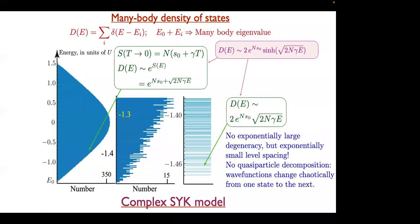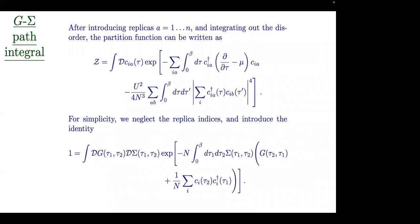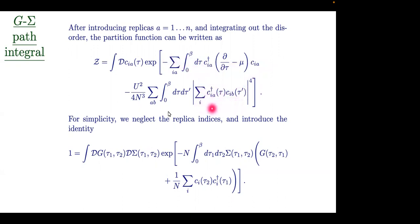Now we understand the results and how to compare with actual numerics of this many-body system. Let me show you how it's done. You take the original model and average over the u's. This is the average of the partition function — it is a path integral. When you average, you get a C⁴ term, C-dagger·C to the power of four. The most important thing about this term is that it involves two different times tau and tau-prime — it's really bi-local in time.